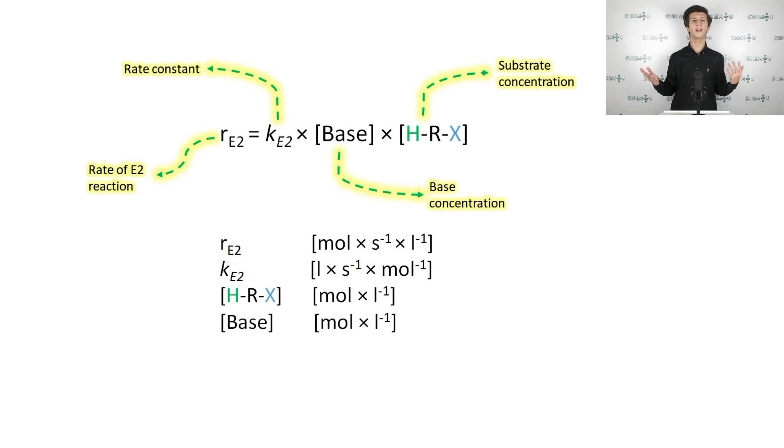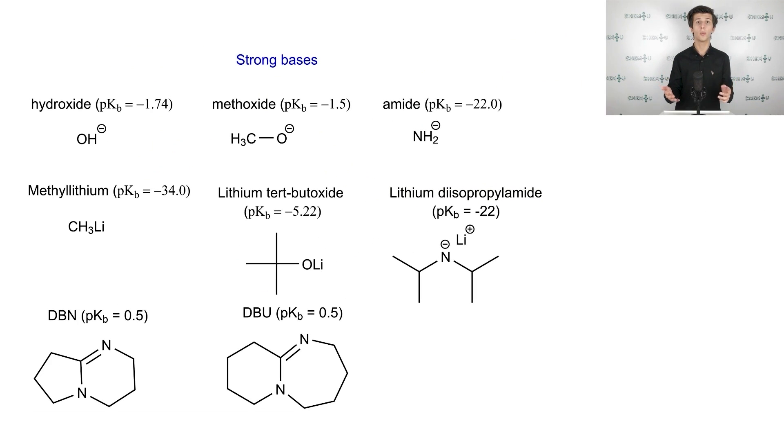We have already mentioned that an increase in base concentration favors the E2 mechanism as it is present in the rate law. The pKb value of the used base in contrast to the E1 mechanism is also important for bimolecular elimination. To be more specific, bases with low pKb favor the E2 mechanism. In other words, if we use a strong base for elimination reaction, such as presented on the slide, we definitely deal with the E2 mechanism.